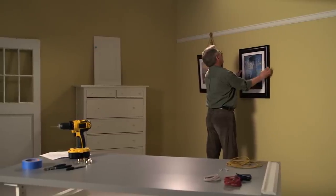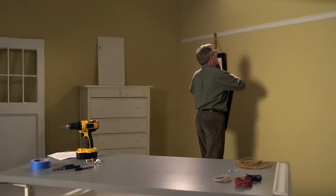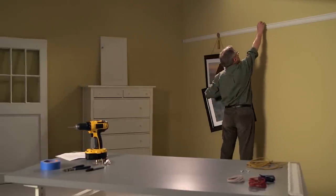Hold the picture up to the wall at the height you want to hang it and mark the wall at the top center of the frame. Place the hook on the rail directly above this center mark.